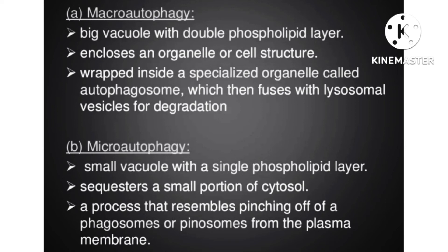Microautophagy involves a small vesicle with a single phospholipid layer that sequesters a small portion of cytosol, a process that resembles pinching of a phagosome or pinosome from the plasma membrane. The difference between macroautophagy and microautophagy is based on the phospholipid layers: double-layered is macroautophagy and single-layered is microautophagy.